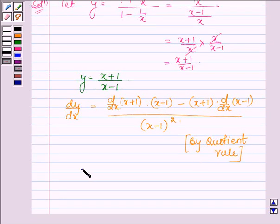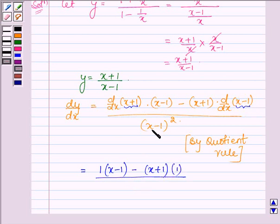And this is further equal to, now derivative of X plus 1 with respect to X is 1, since derivative of constant is 0 and derivative of X is 1. And in the denominator we have X minus 1 minus X plus 1 into derivative of X minus 1 is 1, and in the denominator we have X minus 1 whole square.